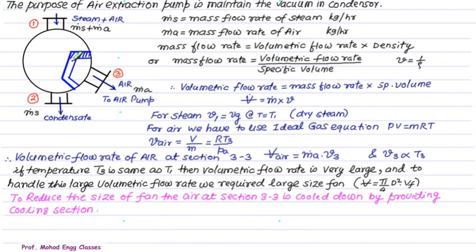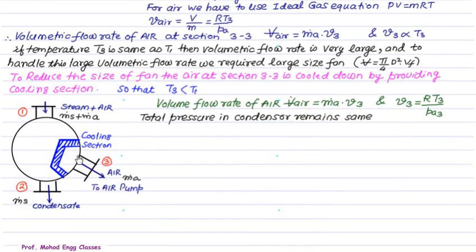So this represents the additional cooling section. And in this cooling section, we can maintain the temperature of air lower than temperature T3. As seen from this, the temperature T3 is lower than T1. So volumetric flow rate of air, now since T3 has been reduced by some quantity as compared to T1, the volumetric flow rate of air